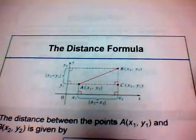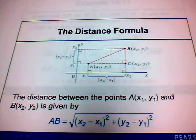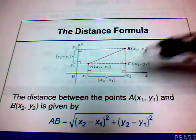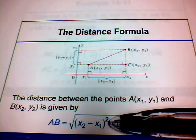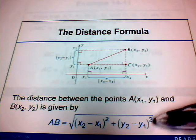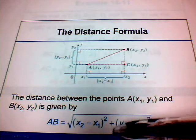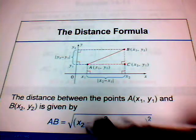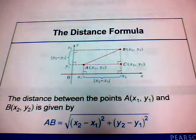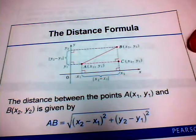In general, the distance formula between two points A at (x1, y1) and B at (x2, y2) is the square root of (x2 minus x1) quantity squared, plus (y2 minus y1) quantity squared. That's the squared difference of the x-coordinates plus the squared difference of the y-coordinates, all under the square root symbol.